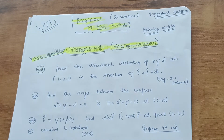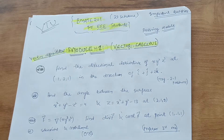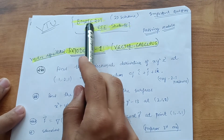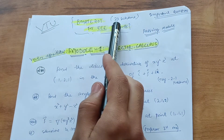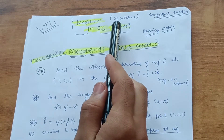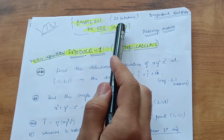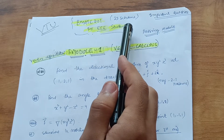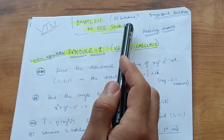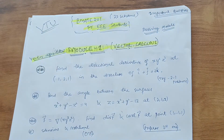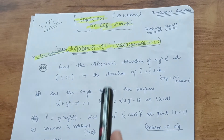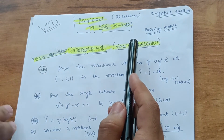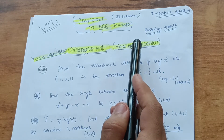Hello friends, welcome back. Today we have Mathematics for EEE students, subject code BM80201 for the 2022 scheme students. VTU has changed two or three modules for each branch. For EEE students, two modules are changed compared to the Mechanical Engineering department.